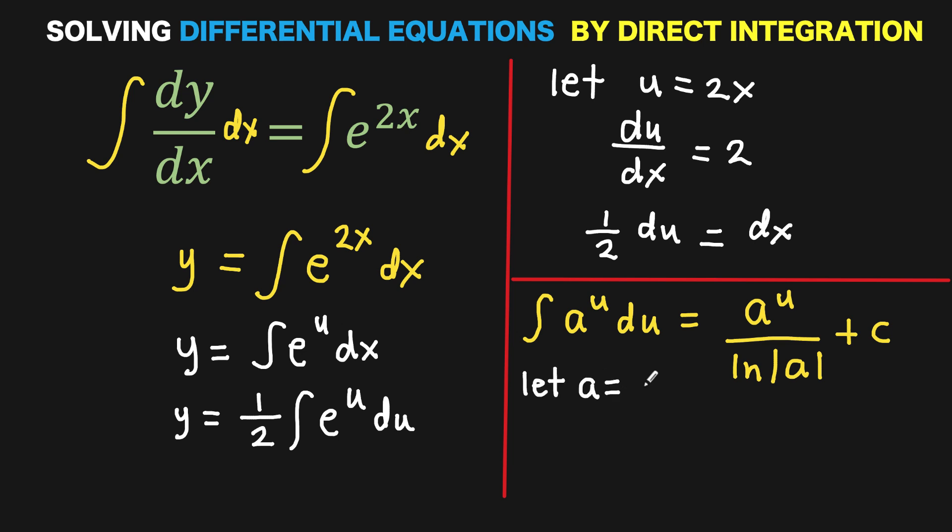And from here, if we let a equal the natural number e, then this becomes the anti-derivative of e to the u du equals e to the u over ln of the absolute value of e, which is a positive number, so we can write this as ln of e plus c. But what is the ln of e? These are inverse operations that cancel each other out, so ln of e is simply 1. Therefore, this is just equal to e to the u plus c.